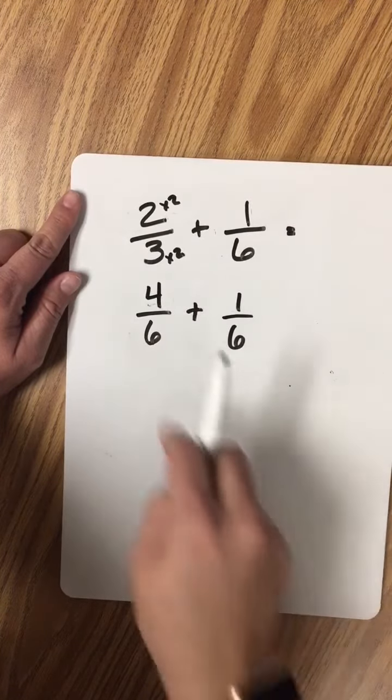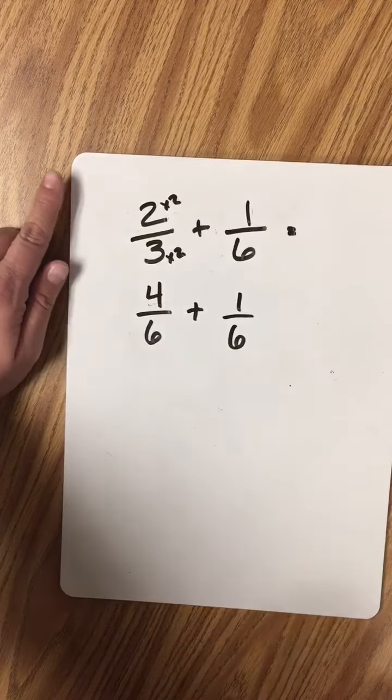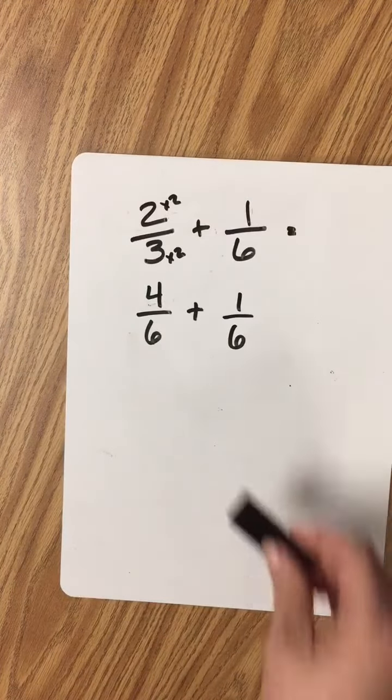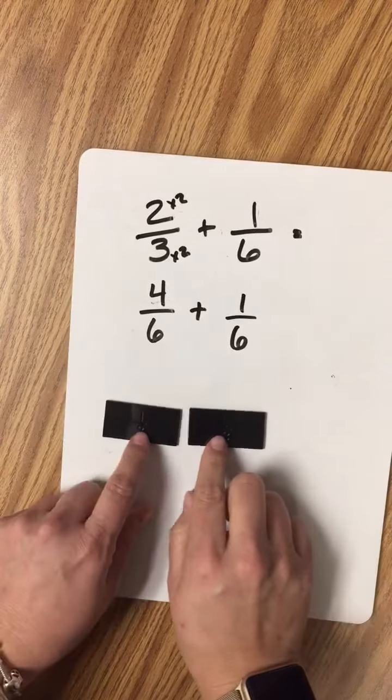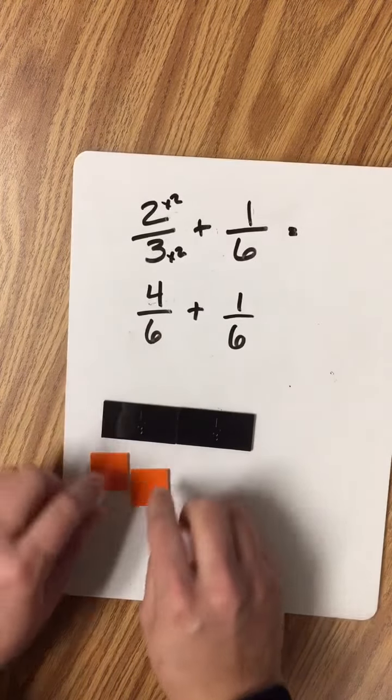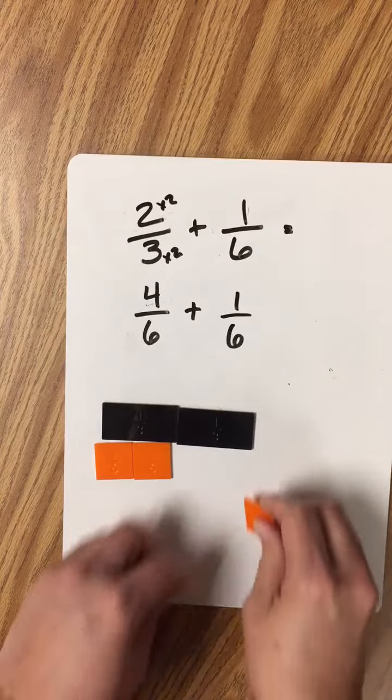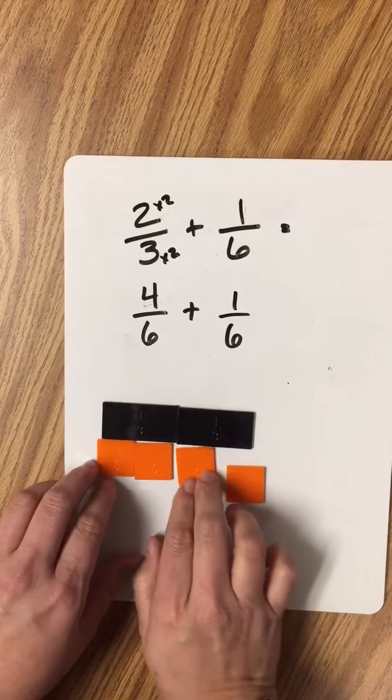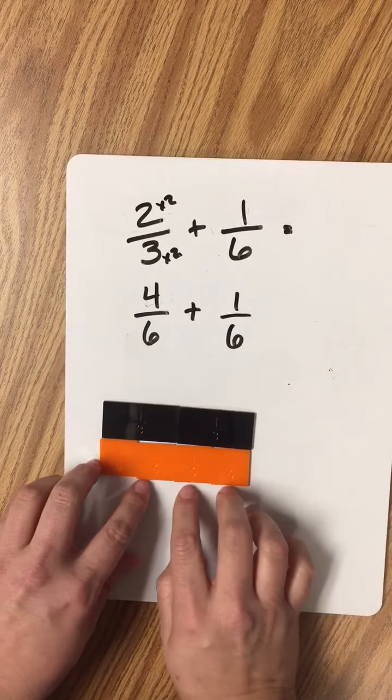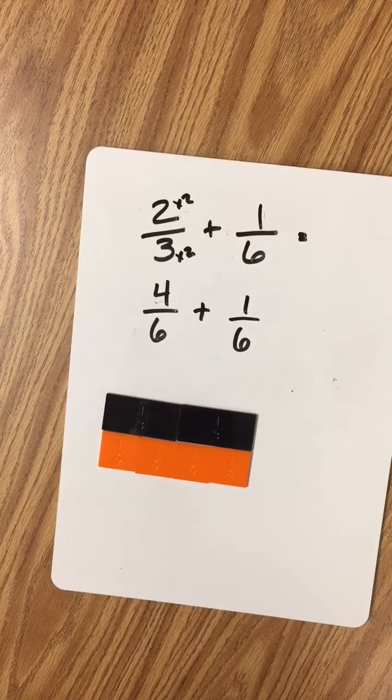2 thirds is an equivalent fraction to 4 sixths. I'll prove it to you with these fraction tiles. There are 2 thirds, and here are 4 sixths. We're good to go.